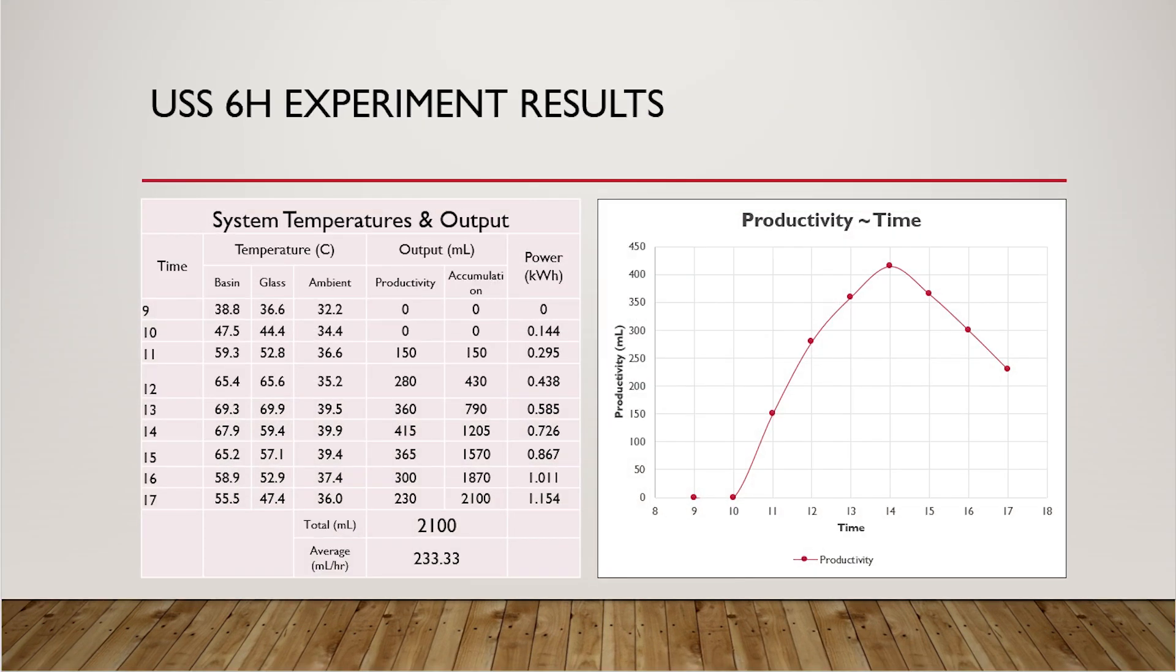The second test is the ultrasonic solar still test, where six atomizers were used in a separate chamber, and the mist was introduced to the solar still. We have also plotted the productivity graph, obtaining a total of 2.1 liters, and an average of 233.33 milliliters per hour.